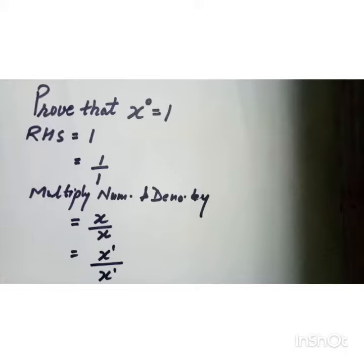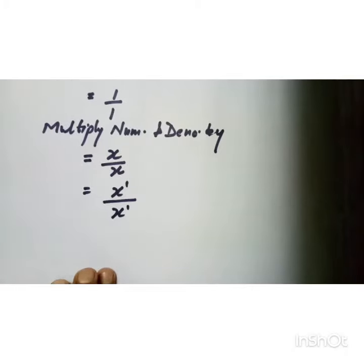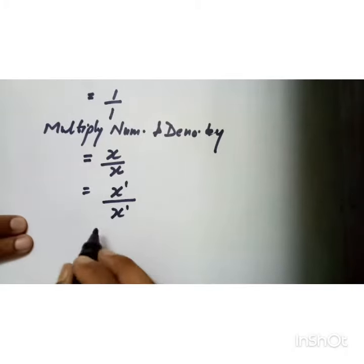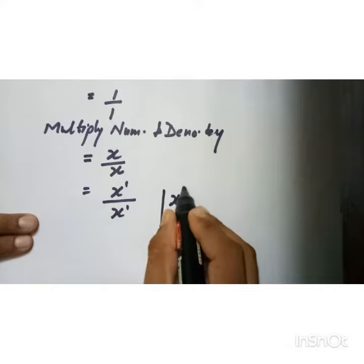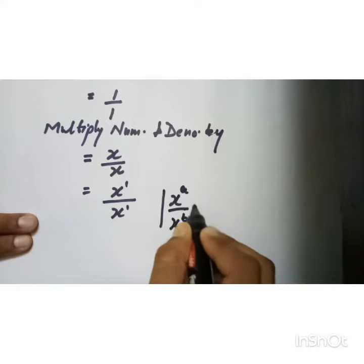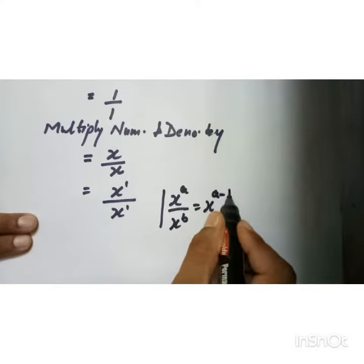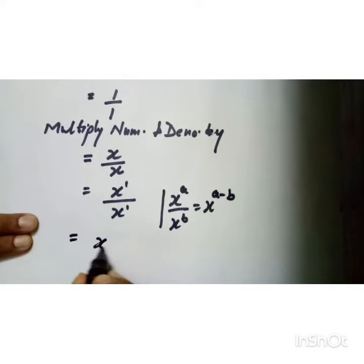And we know the law of exponents: x to the power a over x to the power b is equal to x to the power (a minus b). So it becomes x to the power (1 minus 1), that is x to the power 0, which...